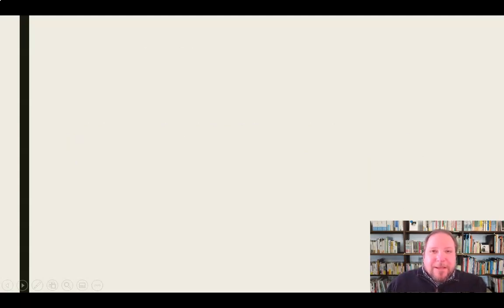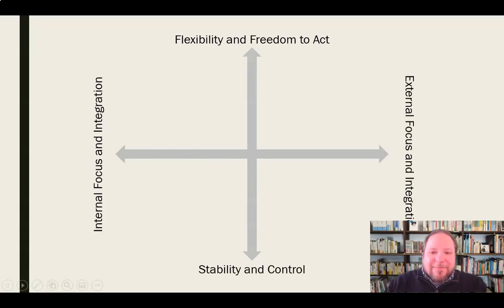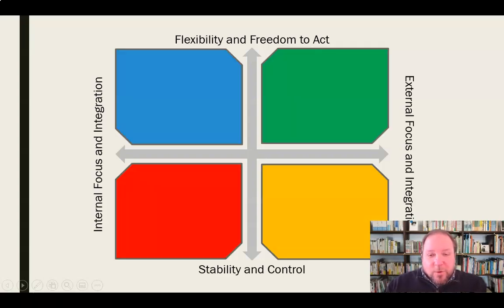It came down to two dimensions they identified: the internal and external dimension — internal focus versus external focus — and the stability and flexibility dimension — flexibility and freedom to act versus stability and control. As you can see, this creates four quadrants, and these four quadrants produce four different types of organizational culture.